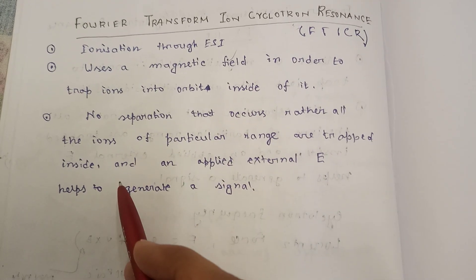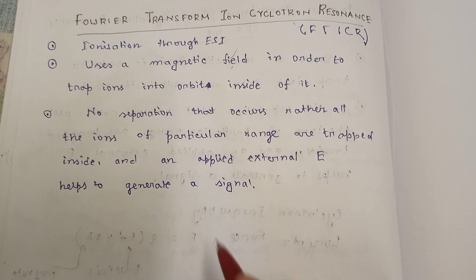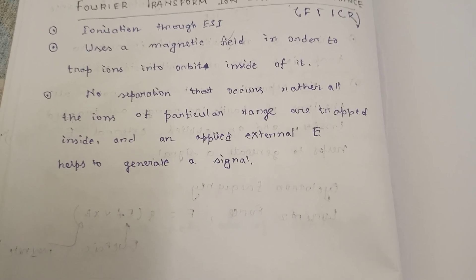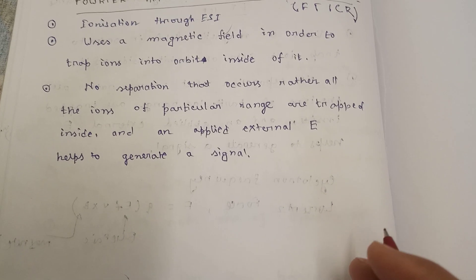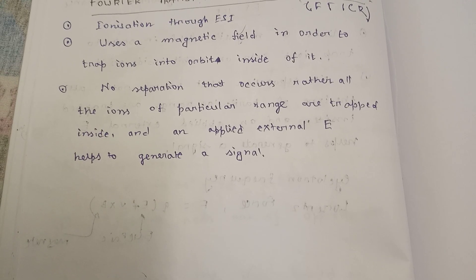An external electric field helps to generate a signal. The ions are trapped in a magnetic field and excited by a radio frequency field.